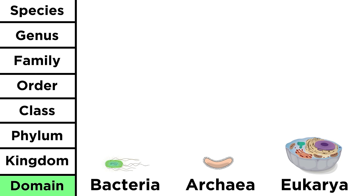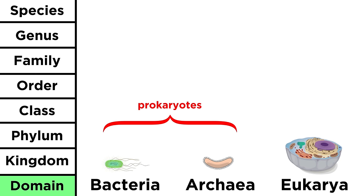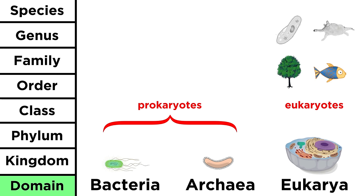These are bacteria, archaea, and eukarya. Bacteria and archaea are the unicellular prokaryotes we talked about, and eukarya is all eukaryotes — this means unicellular protists, as well as all multicellular life on earth, including every plant and animal there is.